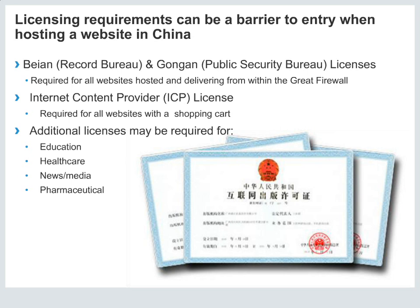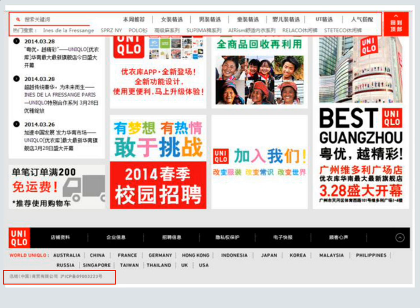One of the other barriers is the licensing requirement, which can be a major barrier to entry when actually hosting a website within China. The Record Bureau and the Public Security Bureau must give you a license — required for all websites hosted and delivering from within the Great Firewall borders. If you're going to have a shopping cart on your site, you must have an ICP license. Additional licenses may be required depending on the sector you're operating in, and getting these licenses takes a long time and is very subjective.